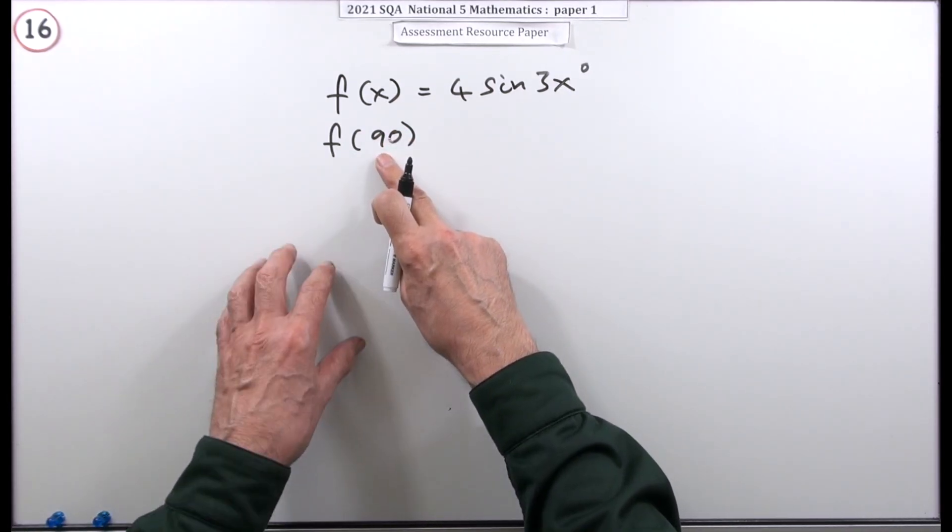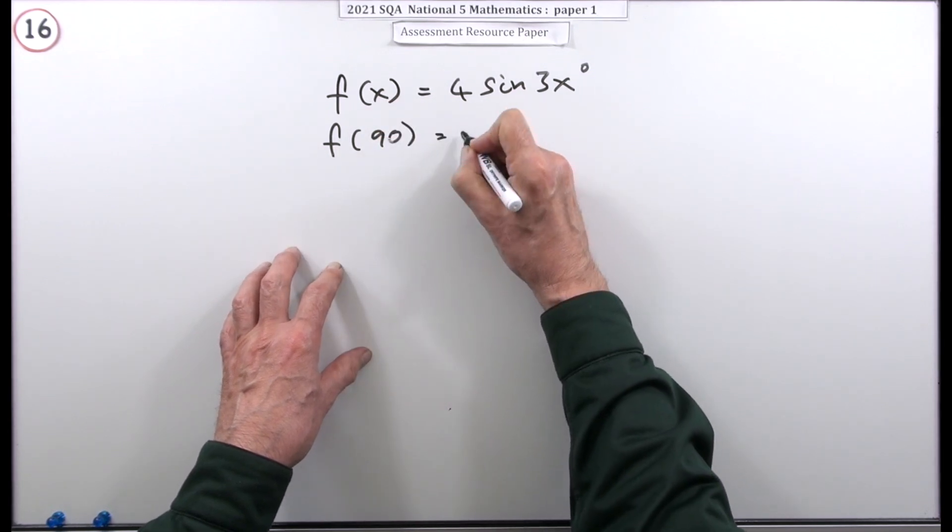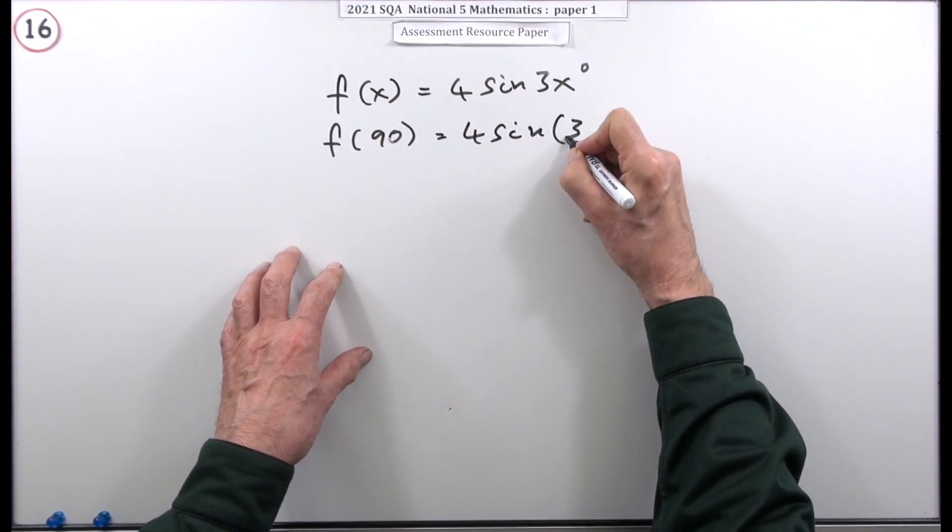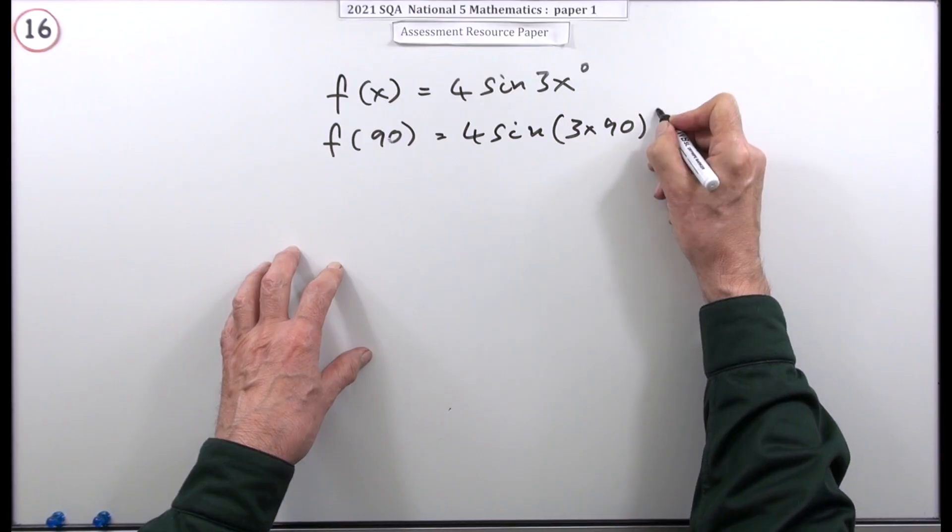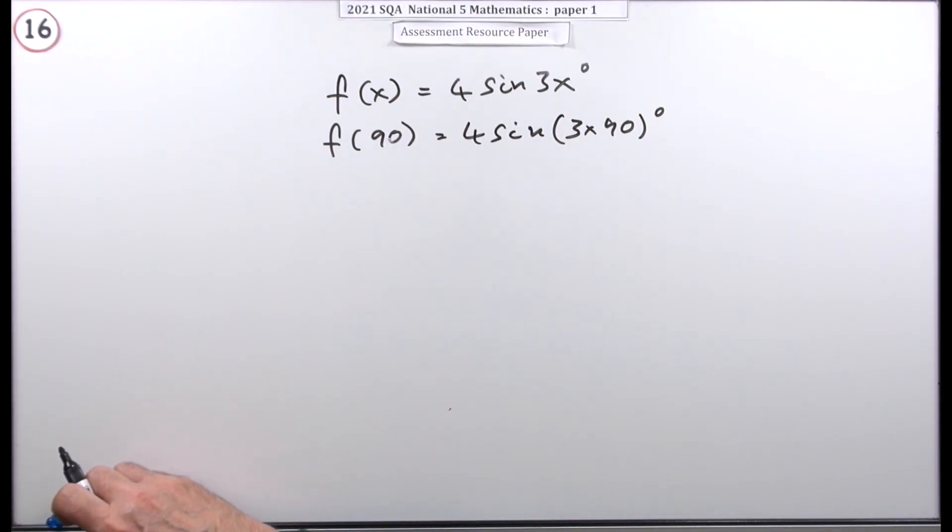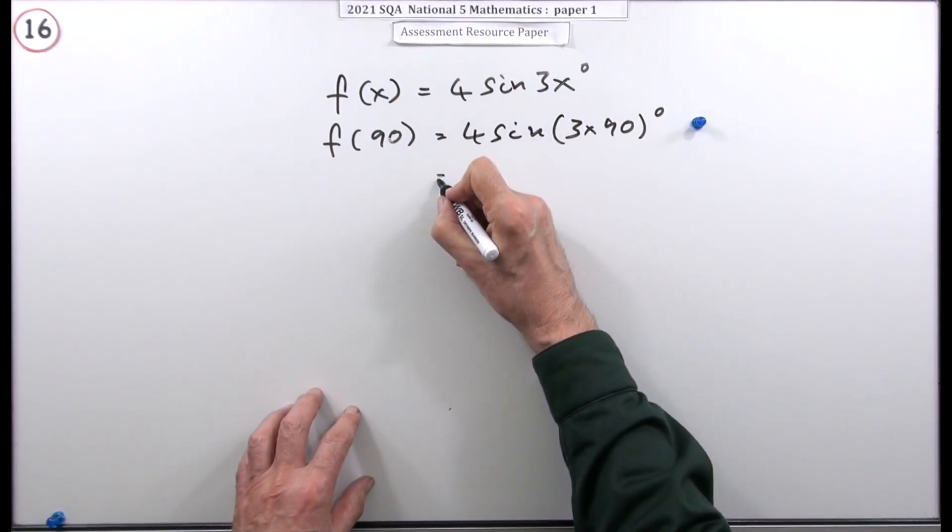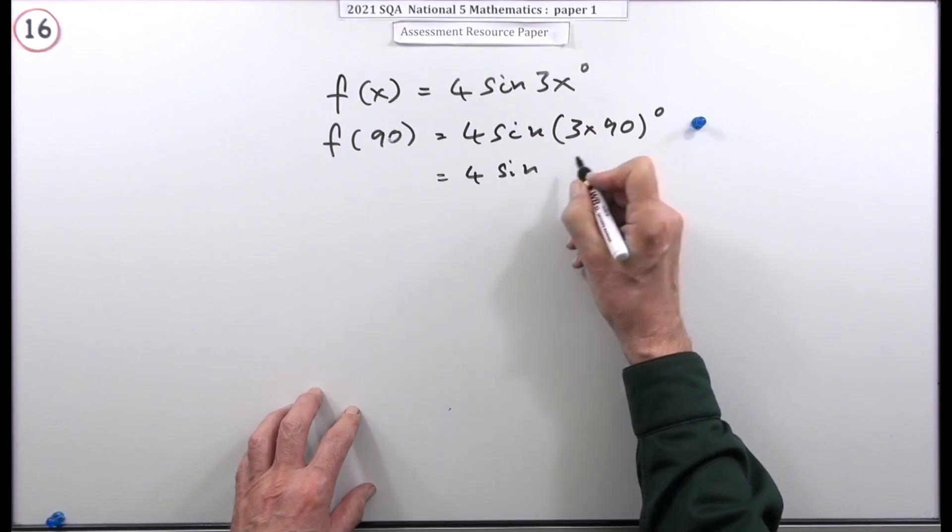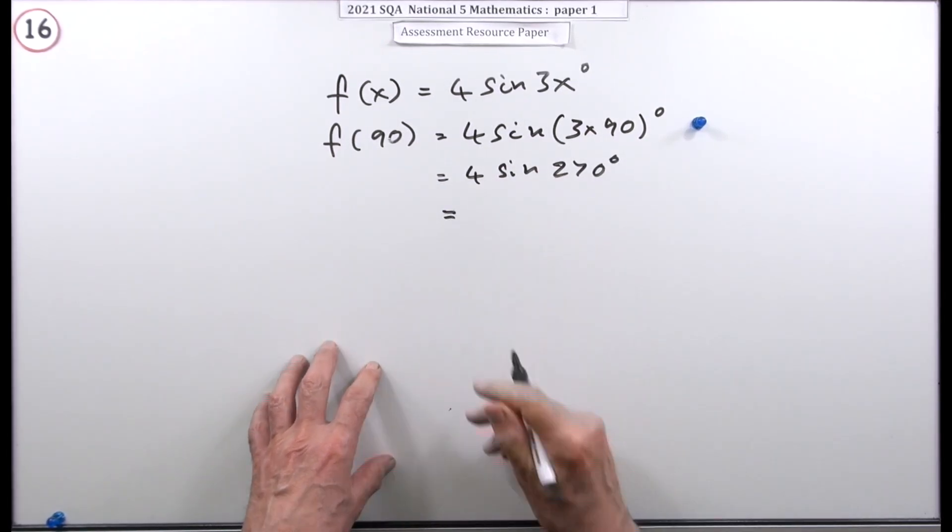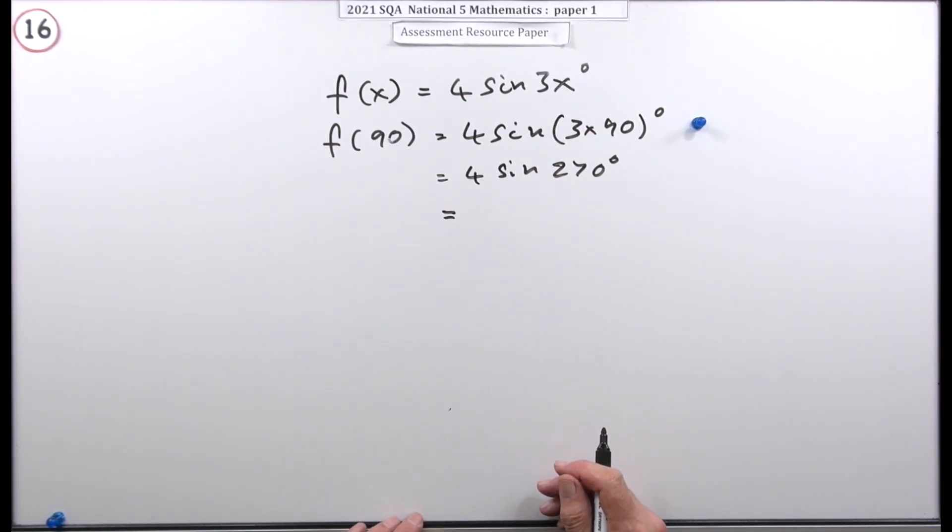Well that just means put 90 in place of x. So that'll just be 4 sine, I'll put this in a bracket, 3 times 90 degrees. In fact doing that gets you a mark. So that means you've got 4 sine and 3 90s are 270 degrees. So the last mark's just for evaluating that.